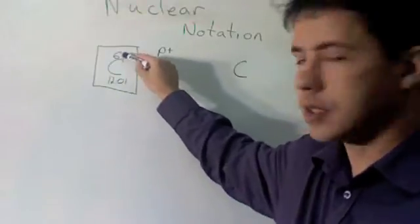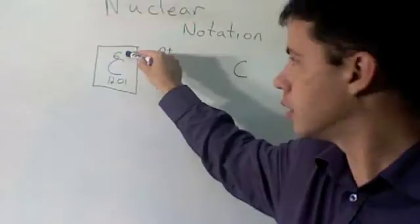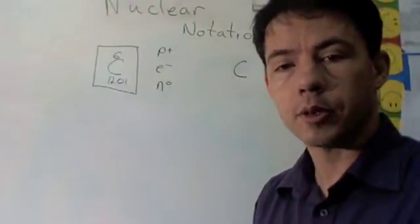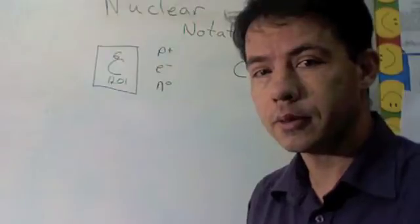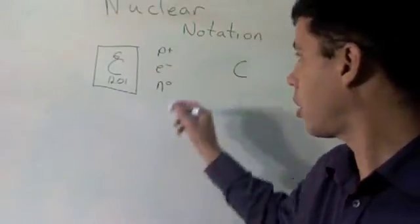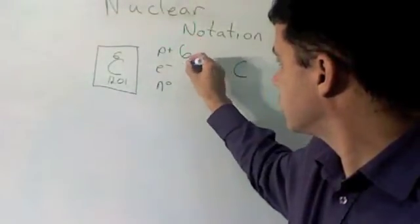We've learned that this top number, the atomic number, tells us the number of protons and electrons. So carbon normally has six protons and six electrons.